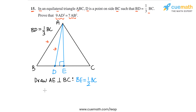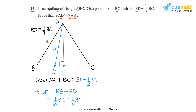Now we can write DE in terms of BC. DE equals BE minus BD. BE is half of BC and BD is one-third of BC. So one-half of BC minus one-third of BC gives us one-sixth of BC. So DE equals one-sixth of BC.